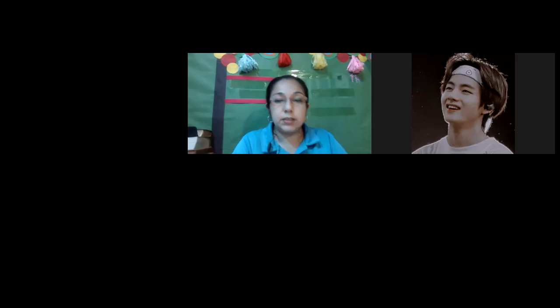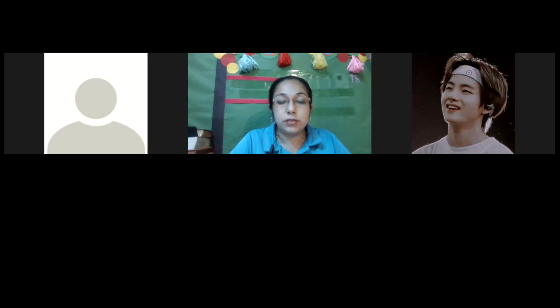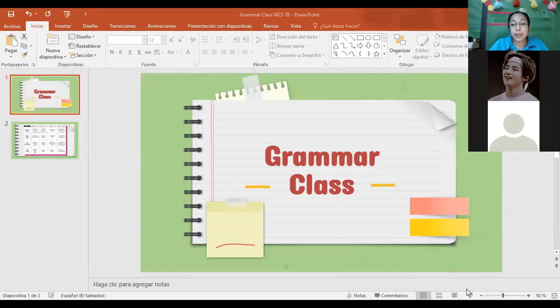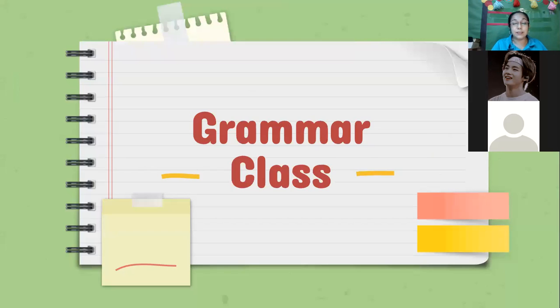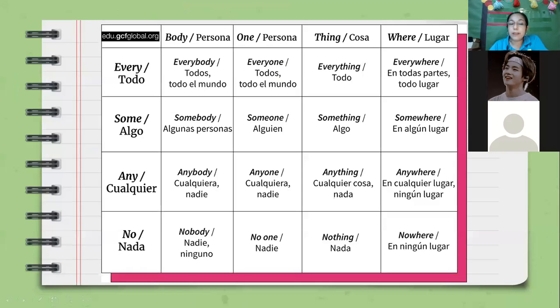Welcome to grammar class. Let's continue talking about indefinite pronouns. In some cases, we don't identify the difference between every indefinite pronoun. One distinction is when you talk about things, another when you talk about people, and another when you talk about places. Let's look at this chart, which is also in English and Spanish, because it's necessary that you know the meaning in Spanish for identifying which indefinite pronoun to use.